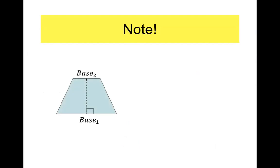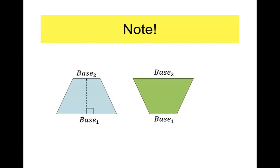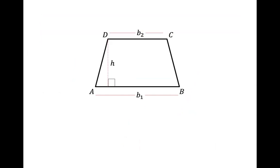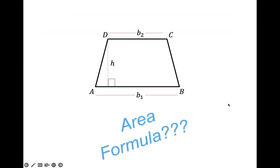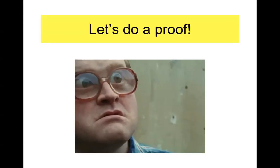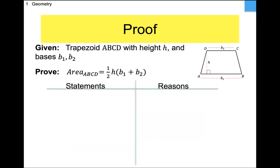You can flip base one and base two around — it doesn't really matter. Just pick one of the parallel sides as base one and the other as base two. That's all the background knowledge for trapezoids. Now let's move on to the formula for area. Most students can't remember this formula — they know it's the more complicated one — but I'm going to prove it right now.